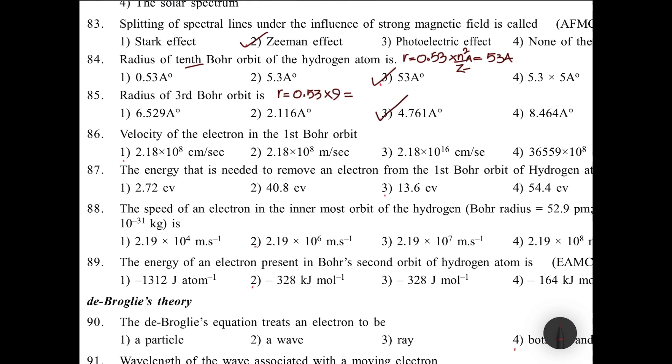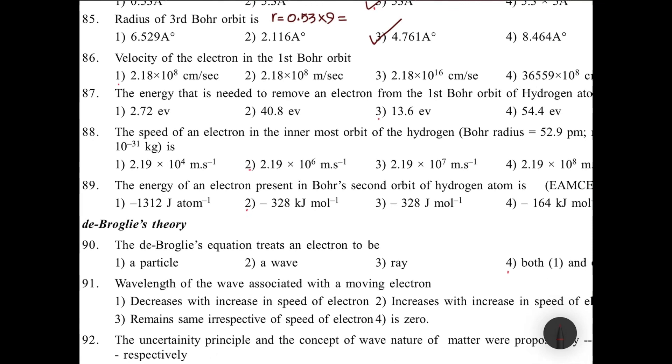Velocity of the electron in the first Bohr orbit: velocity formula is 2.18 × z/n × 10⁸ cm/s, which is almost 137 times less than velocity of light.